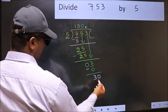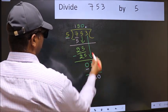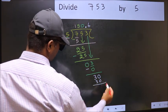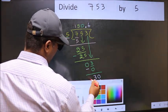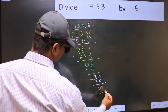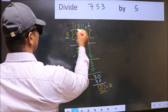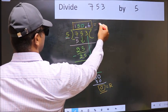So 30. When do we get 30 in the 5 table? 5, 6, 30. Now you should subtract. 30 minus 30, 0. So this is our remainder. And this is our quotient.